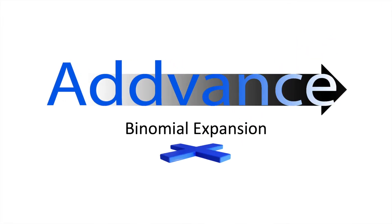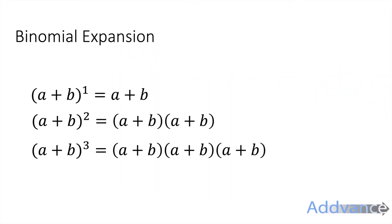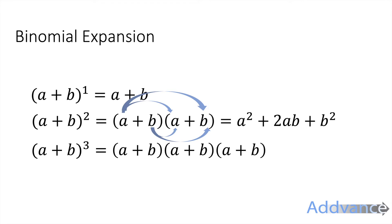Hi everybody and welcome back. Today we're looking at binomial expansion — a way of simplifying and expanding brackets. I've shown you the first three powers of (a+b) on the screen. (a+b) to power one is a+b; (a+b) to power two, expanded using the crab's claw method, becomes a squared plus 2ab plus b squared.